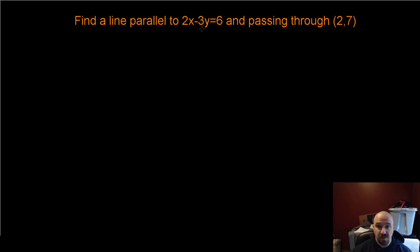Find a line parallel to 2x - 3y = 6 and passing through the point (2, 7). A couple of ways to do this. I've made videos in the past covering how to write an equation given a slope and a point. You can use the point-slope form of the line: y - y₁ = m(x - x₁). You can also use the slope-intercept form, typically y = mx + b.